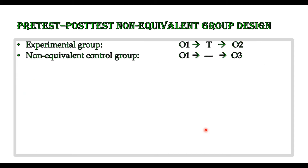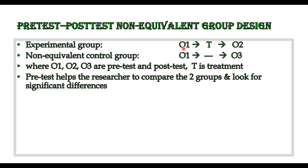Here is a figurative representation of the pre-test post-test design. We have two groups — the experimental group and the control group — but because these two groups are not equivalent due to the lack of random assignment, we have O1 as the observation or pre-test in both the experimental and control groups. The experimental group then undergoes treatment, while the control group does not, and then we have post-tests O2 and O3 in the experimental and control groups respectively.